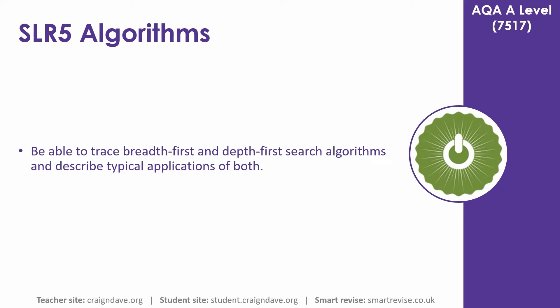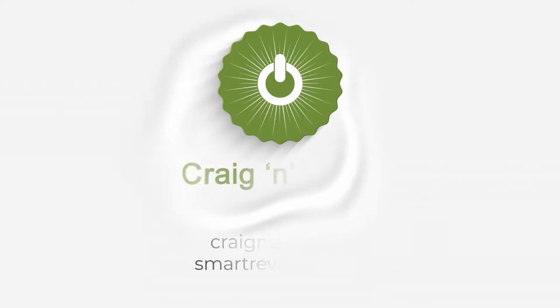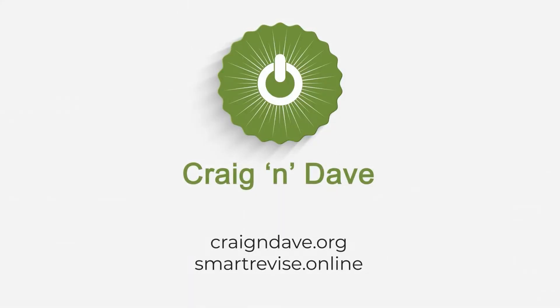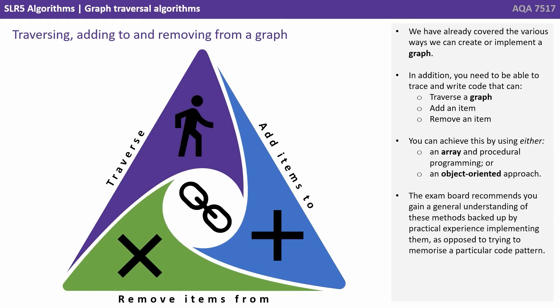In this video we look at how to trace a breadth-first and a depth-first search algorithm and describe typical applications of both. We've already covered the various ways we can create or implement a graph. In addition, you need to be able to trace and write code that can traverse a graph, add an item and remove an item. You can achieve this using either an array and procedural programming or an object-oriented approach. The exam board recommends you gain a general understanding of these methods backed up by practical experience of implementing them, as opposed to trying to memorize any particular code pattern.